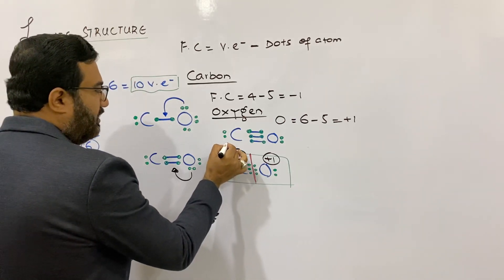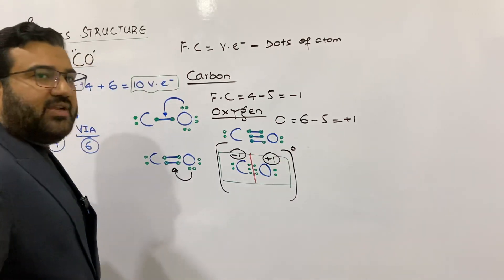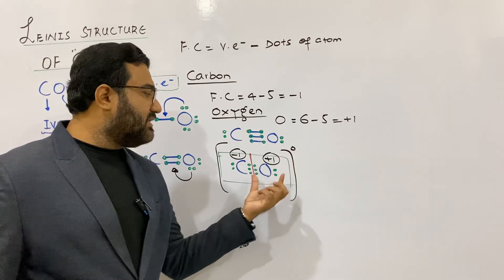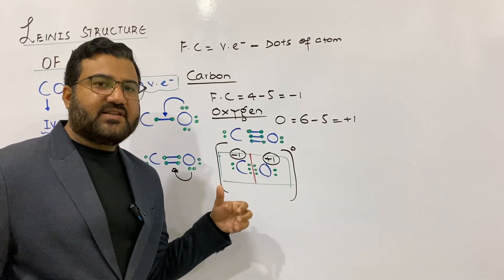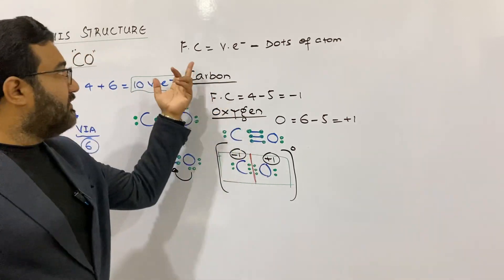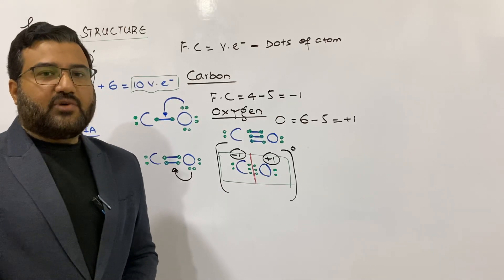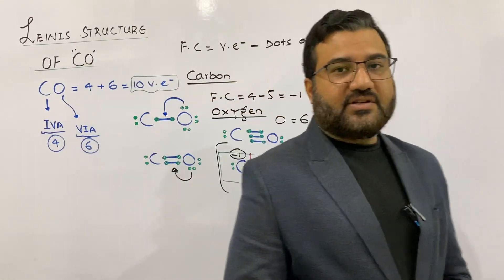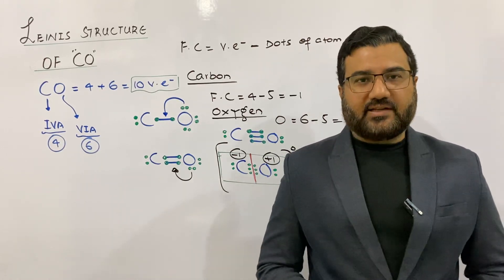Overall, the molecule of CO will be neutral. This is the actual charge, which is the overall charge of the molecule. The formal charges are just theoretical charges calculated by the formula — they represent the charges on the individual atoms within the molecule. So that was all about the Lewis structure of carbon monoxide. Next time we will come up with some new lecture. Till then, take care.